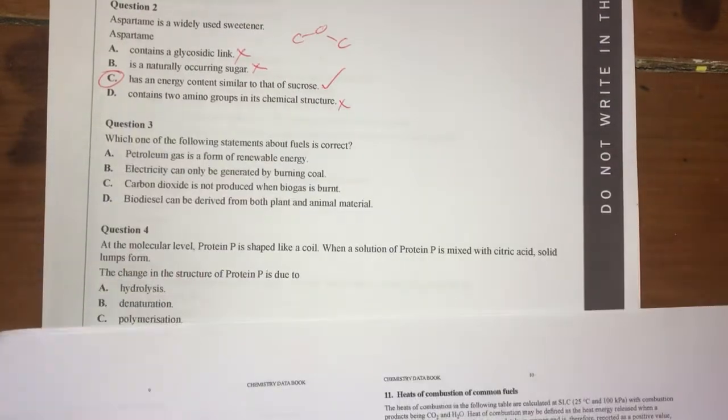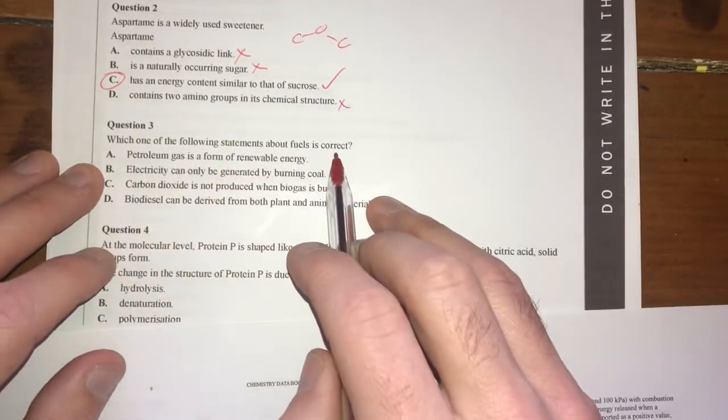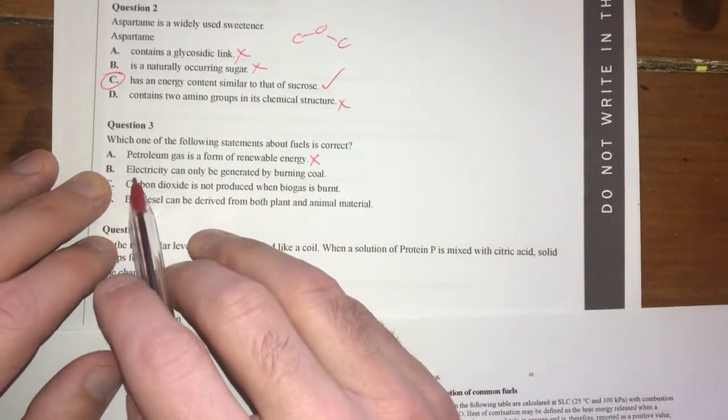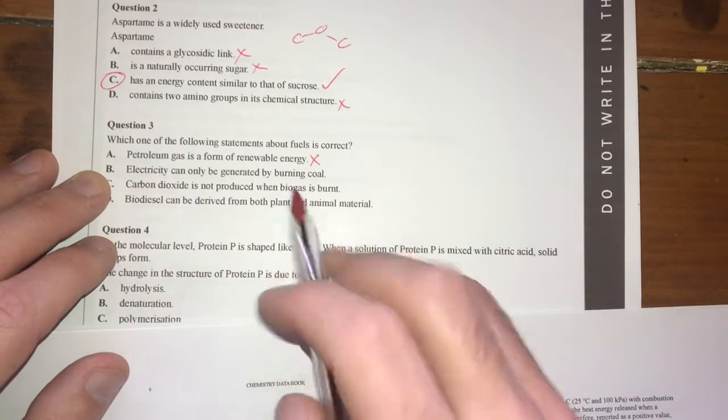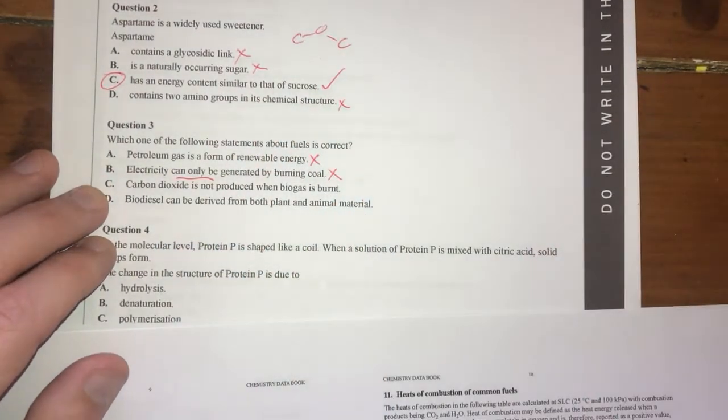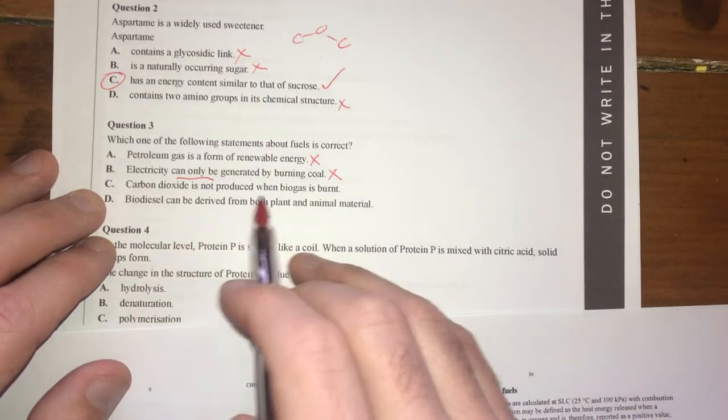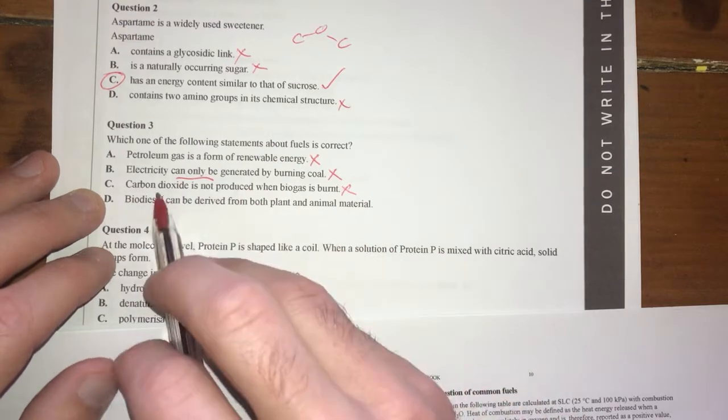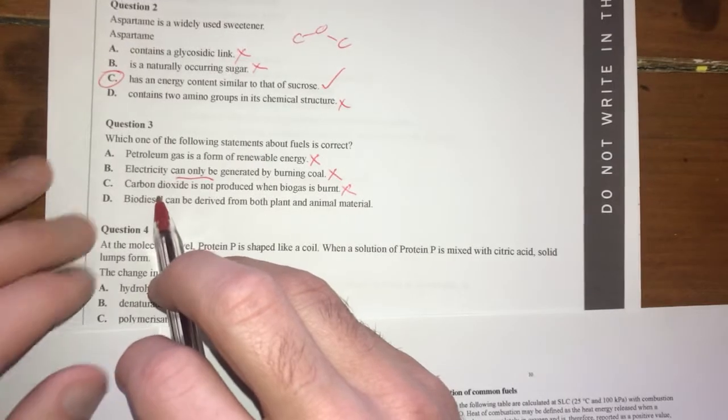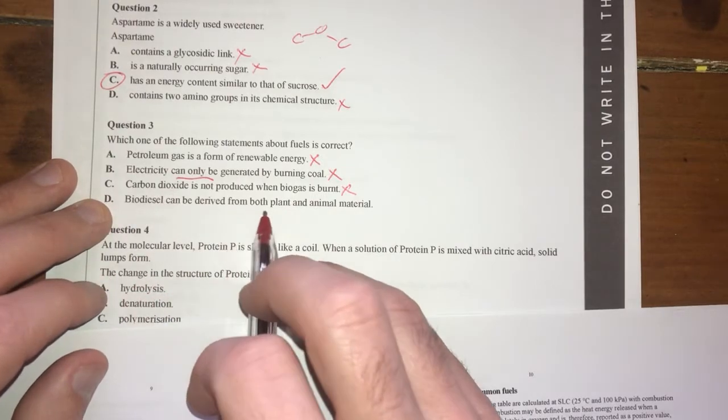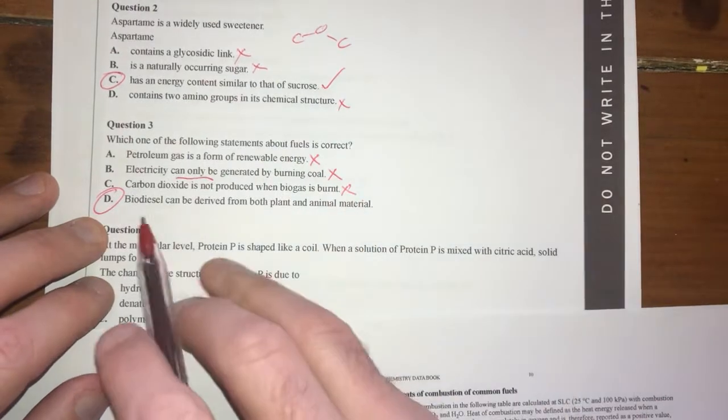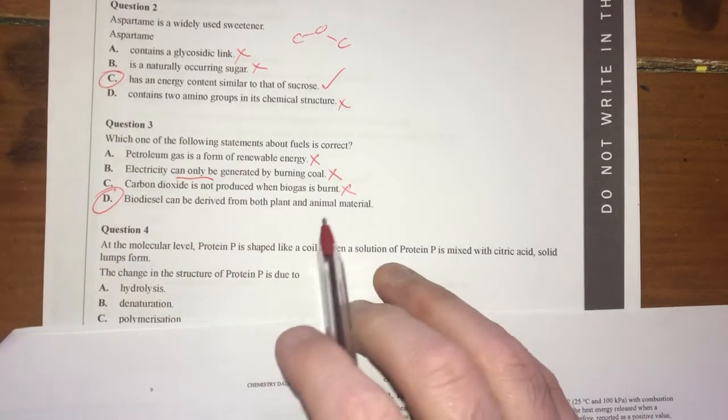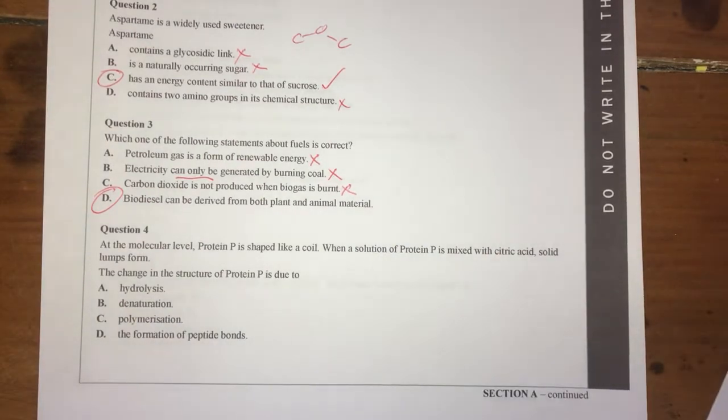Question three: which of the following statements about fuels is correct? Petroleum gas is a form of renewable energy—completely not true, it's a fossil fuel. Electricity can only be generated by burning coal—absolutely not, you've got solar energy and a whole bunch of others. Carbon dioxide is not produced when biogas is burnt—that's not true, whilst you've got net zero carbon dioxide, it's still produced, it's just taken in when it's grown. Biodiesel can be derived from both plant and animal material—that is true, although mostly done through plants, very rarely from animal fats because they're saturated and really viscous.